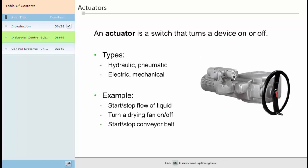At its most basic, an actuator is simply a switch that turns a device on or off, or that allows a change of state from A to B. Actuators are found in four basic types: hydraulic, pneumatic, electric, and mechanical.